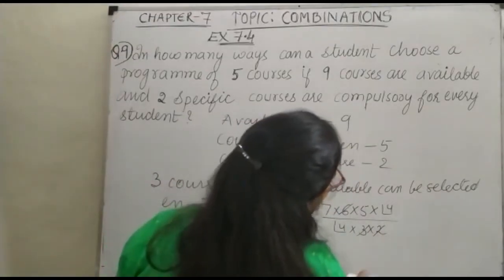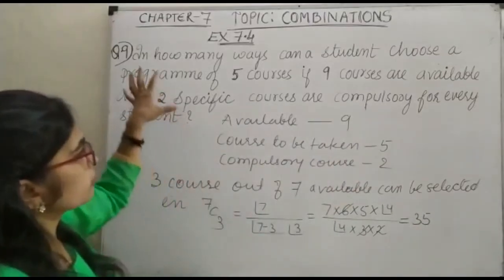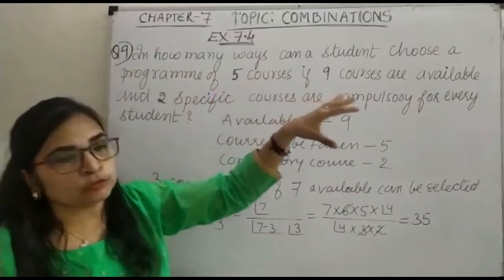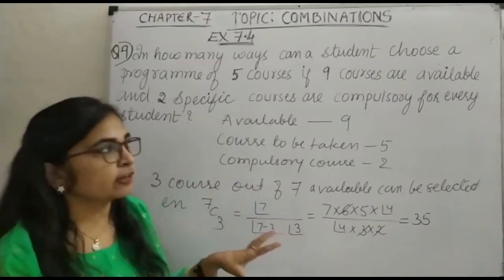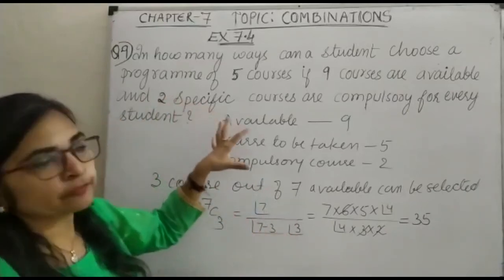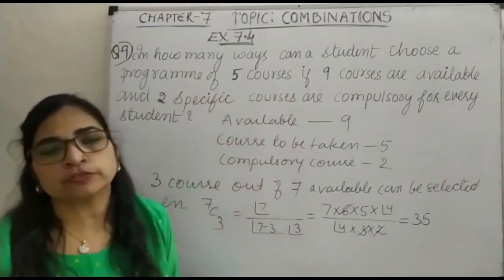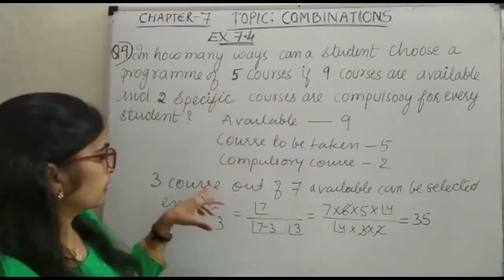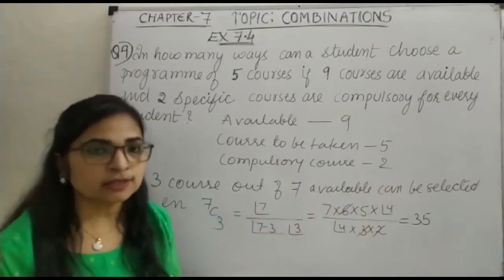So again, let us move to the question: In how many ways can a student choose a program? So a student can choose a program in 35 ways because 2 specific courses are there. When 9 minus 2 gives 7, out of 7, 3 can be selected in 7C3 ways and that gives us 35. Thank you.